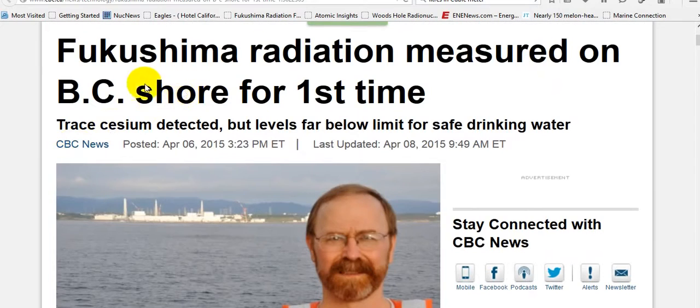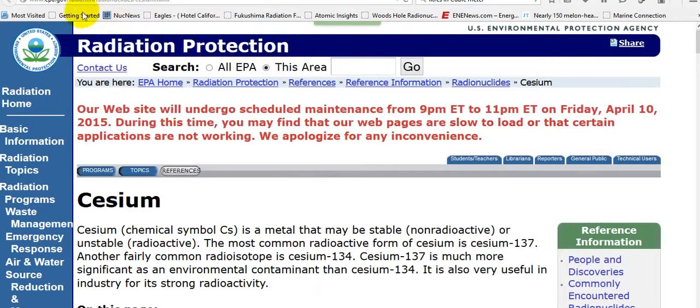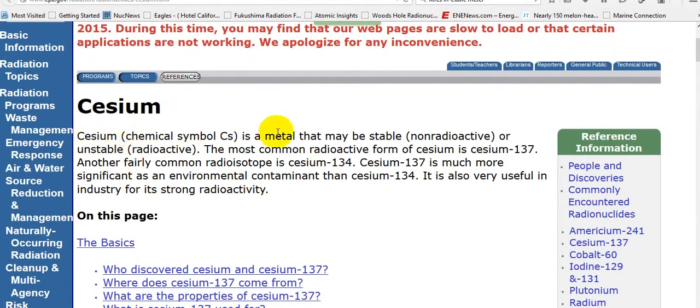Fukushima radiation was measured on BC shore for the first time. Trace cesium detected. Cesium, not cesium-137, but he put cesium. The U.S. EPA says cesium is a metal that may be stable, non-radioactive, or unstable, radioactive. The most common radioactive form of cesium is 137. Cesium is not radioactive, but cesium-137 that went through a chain reaction is.